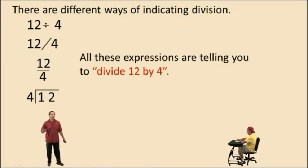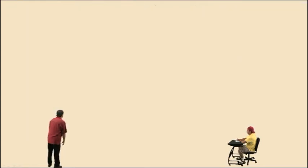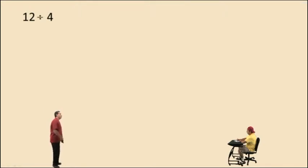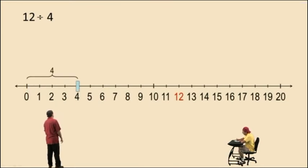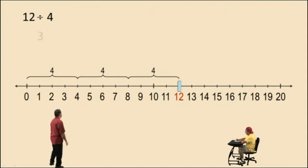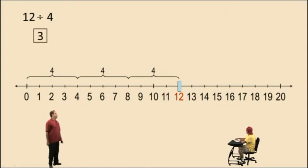In other words, try to figure out how many 4's go into 12. What does division mean? Well, 12 divided by 4 is basically asking you how many 4's go into 12. There's one 4, there's 2 4's, and there's 3 4's. So 3 whole 4's go into 12, so 12 divided by 4 is 3.